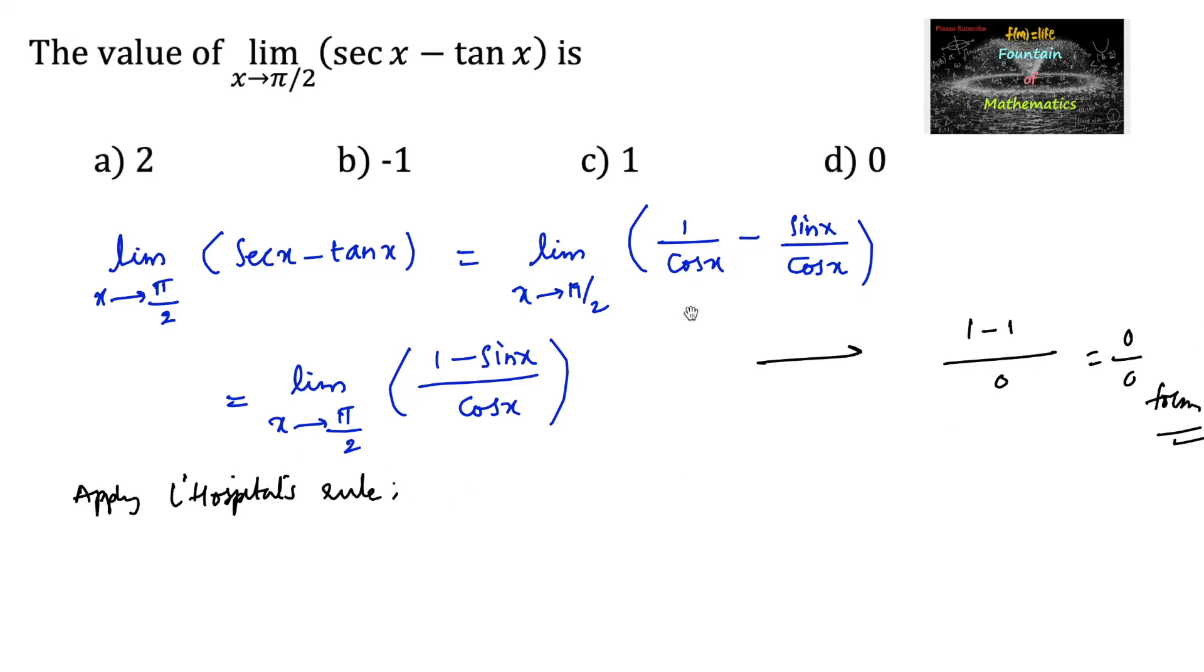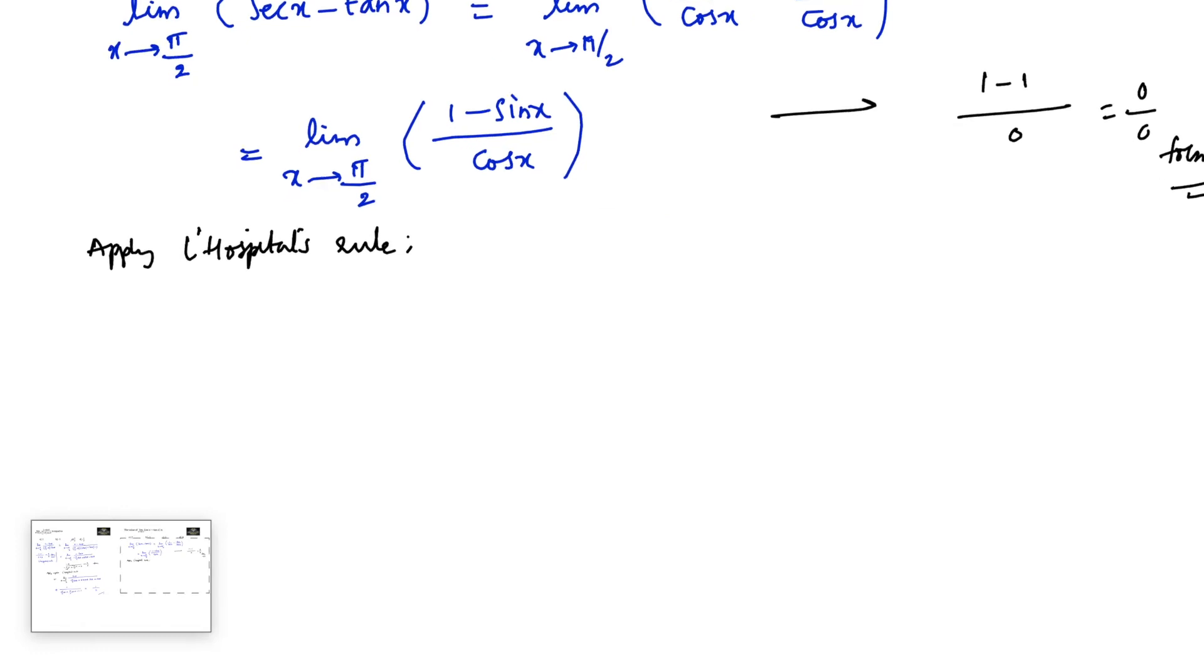So let's differentiate numerator and denominator separately. Limit x tends to π/2, differentiation of 1 is 0 and differentiation of sin x is cos x, over cos x differentiation is minus sin x.